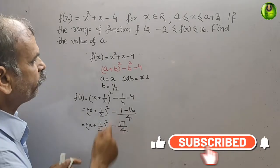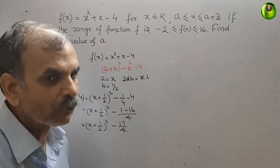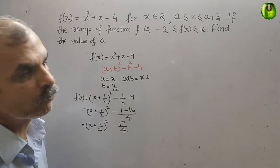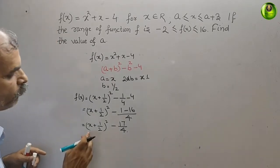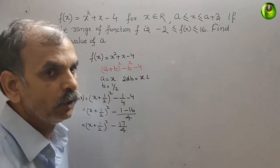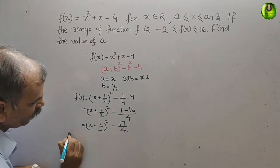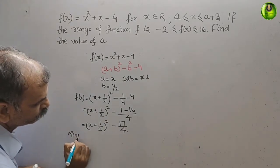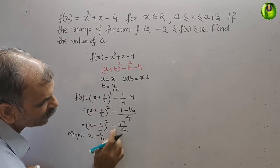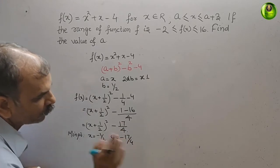Since the coefficient of x² is positive, the parabola has a minimum point. Setting x + 1/2 = 0 gives x = -1/2. The minimum point is at x = -1/2 and y = -17/4.